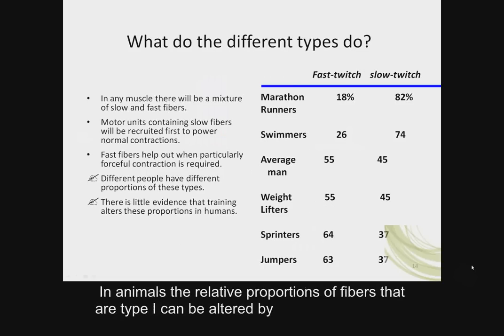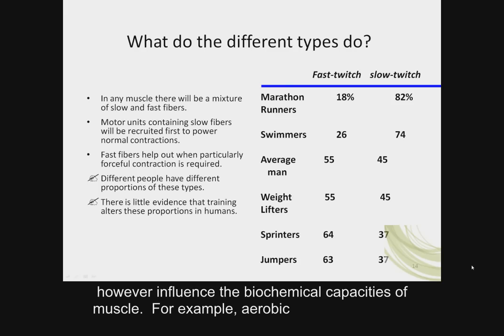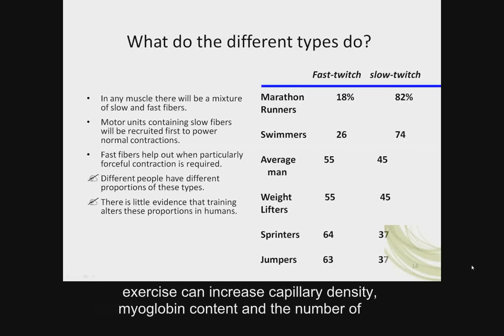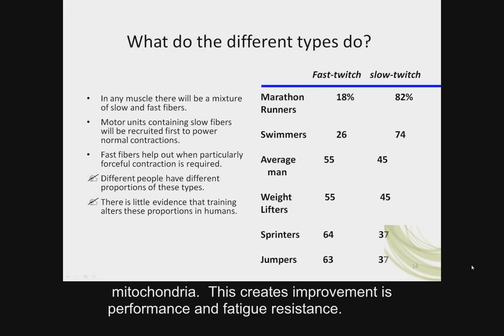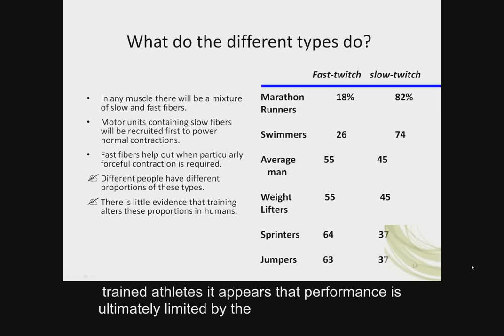In animals, the relative proportions of fiber types can be altered by exercise regimes, but the changes are not permanent. Exercise can, however, influence the biochemical capacities of muscle. For example, aerobic exercise can increase capillary density, myoglobin content, and the number of mitochondria, creating improvement in performance and fatigue resistance. There will also be similar changes to the capacity of the cardiovascular system. In trained athletes, it appears that performance is ultimately limited by the pulmonary system — the ability to supply oxygen to the muscles is the limiting factor.